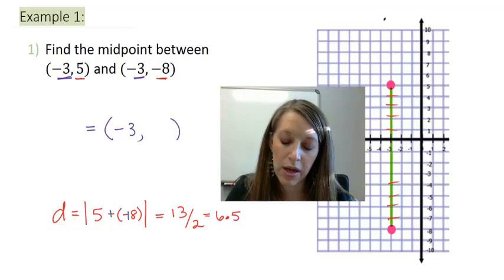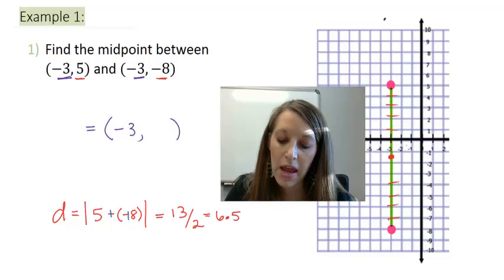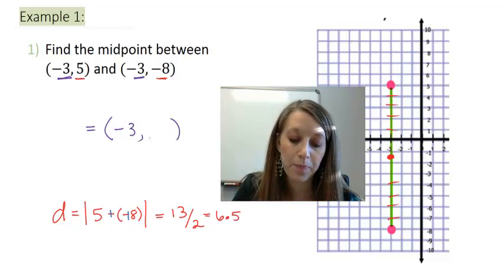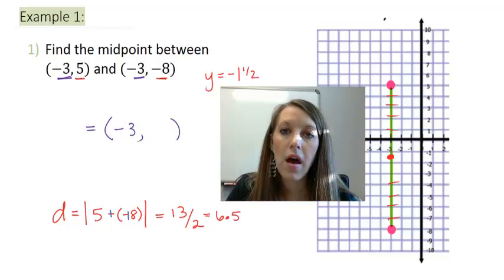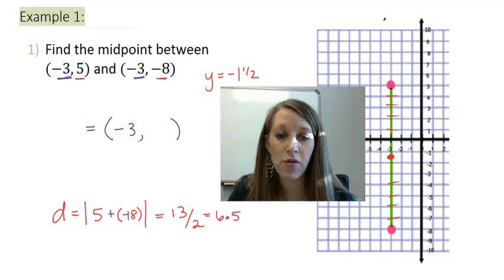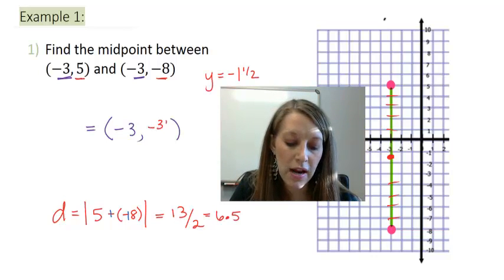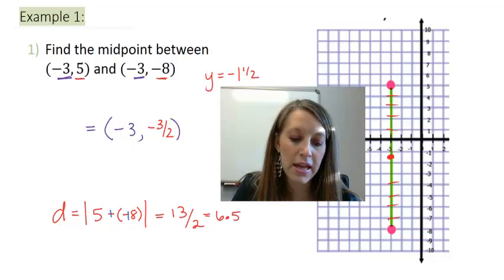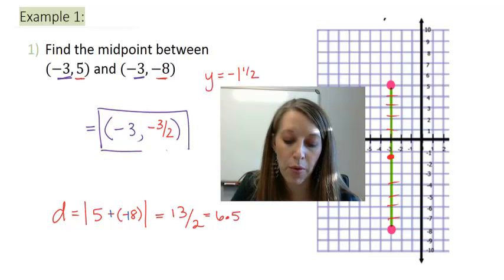So I will count 6 and a half units away from each tick mark. So from my top, I'm going to count 1, 2, 3, 4, 5, 6 and a half units here. And that should be the same from the bottom. 1, 2, 3, 4, 5, 6 and a half units there. I need to figure out what y-coordinate that is, and that is negative 1 and a half. But improper fractions are always the best format. So the final answer that I would give here is negative 3 and negative 3 halves. So that is my midpoint between my two points given.